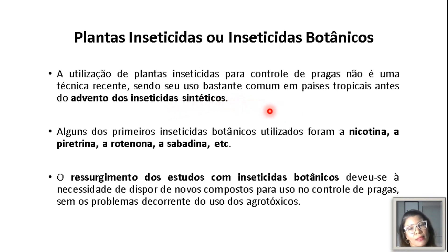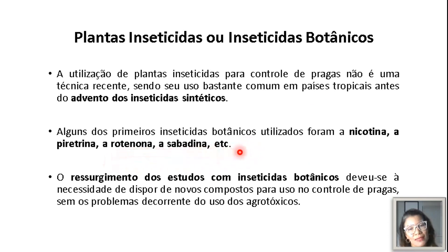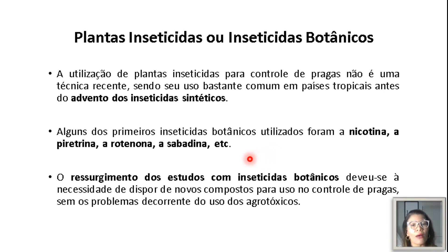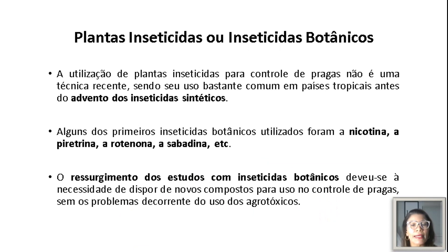Os primeiros inseticidas botânicos utilizados foram a nicotina, a piretrina, a rotenona e a sabadina. No entanto, essas plantas foram deixadas de lado com o advento dos agrotóxicos, sobretudo depois da Segunda Guerra Mundial. Com o passar do tempo, quando começou-se a observar toda a problemática decorrente do uso dos agrotóxicos, buscou-se o ressurgimento dos estudos com inseticidas botânicos, em busca de novos compostos para o controle de pragas sem os problemas dos inseticidas químicos.